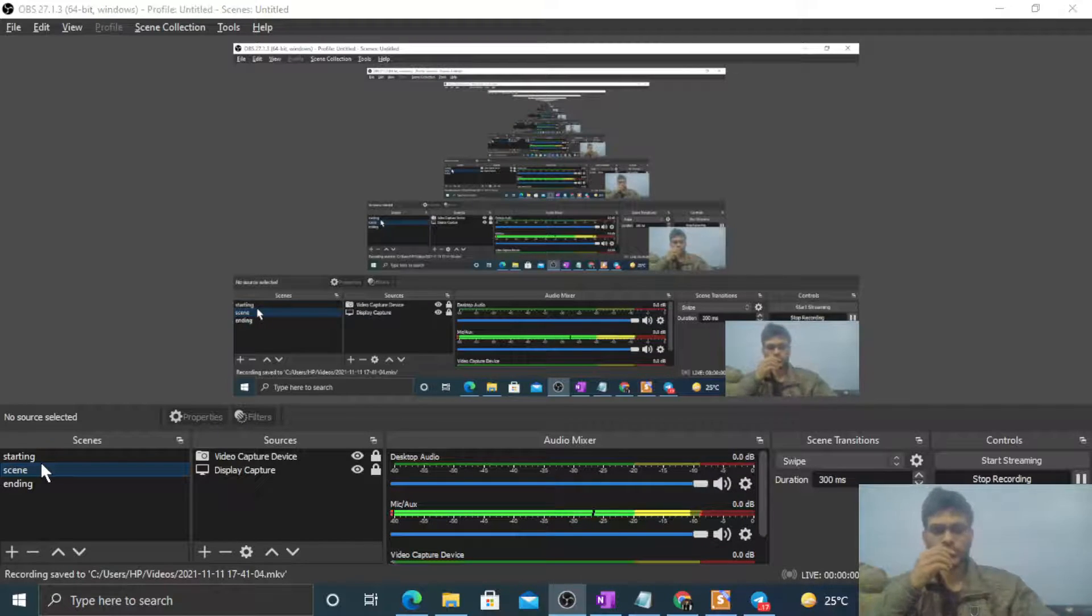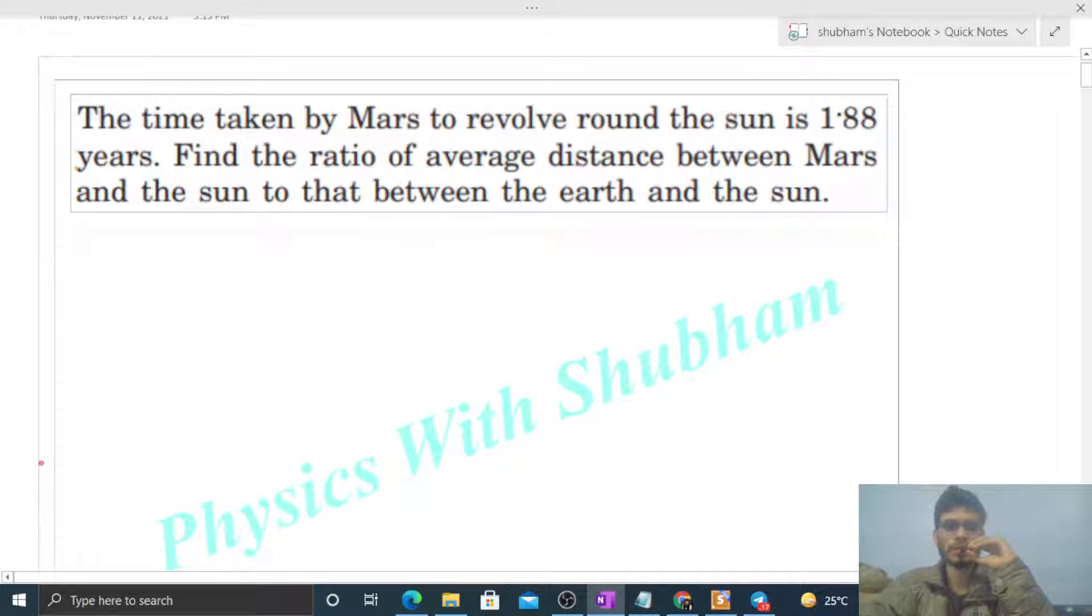Okay, hi everyone. So today let's discuss this interesting problem. It says the time taken by Mars to revolve around the Sun is 1.88 years. Find the ratio of average distance between Mars and the Sun to that between Earth and the Sun.